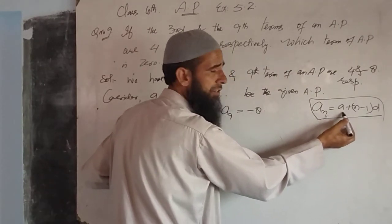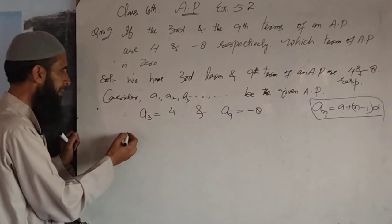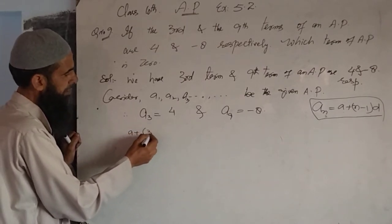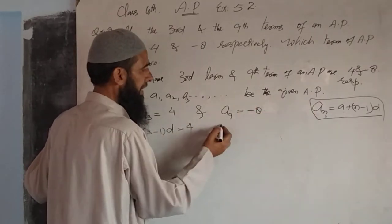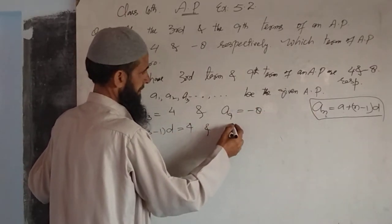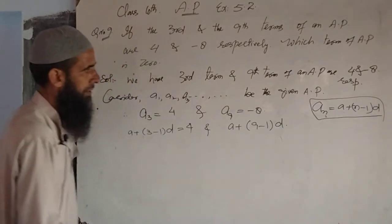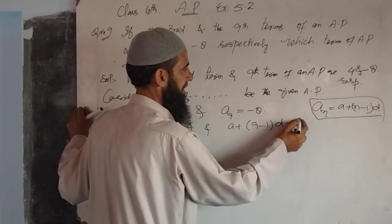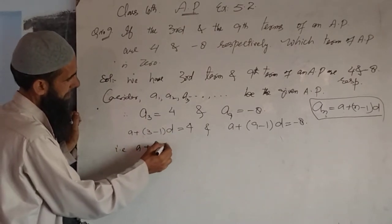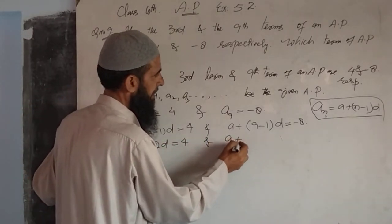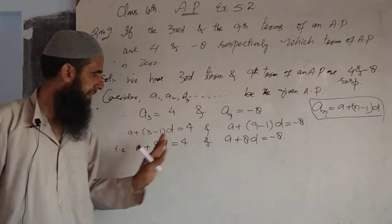Using the formula a_n = a + (n-1)d, for the 3rd term: a3 = a + (3-1)d = a + 2d = 4. For the 9th term: a9 = a + (9-1)d = a + 8d = minus 8. We now have two equations in terms of a and d.